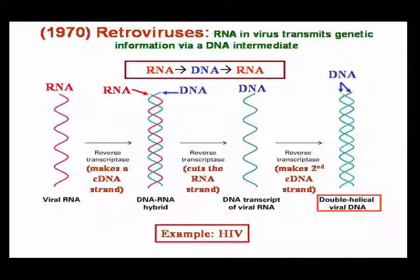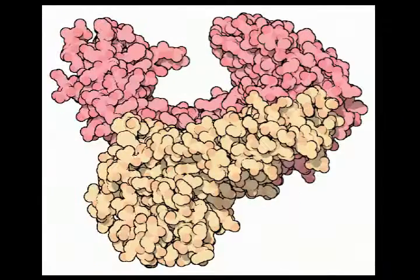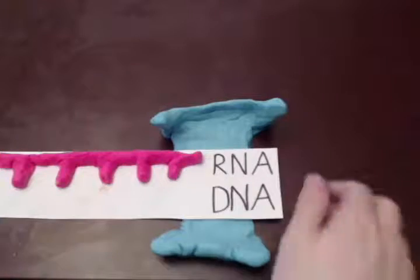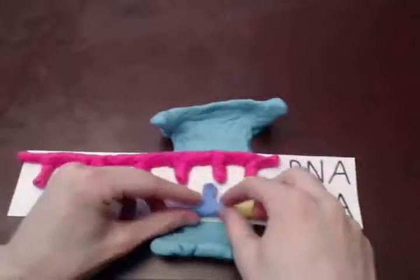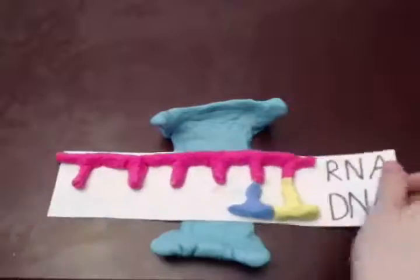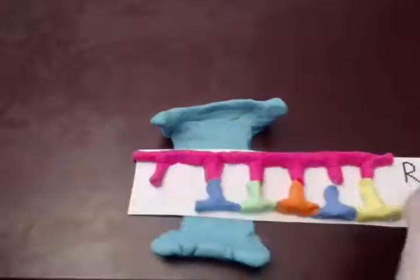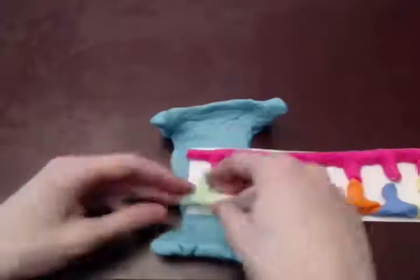When HIV infects a host cell, it must first convert its single-stranded RNA genome into a double-stranded piece of viral DNA. This is where reverse transcriptase comes into play. There are two active sites on the enzyme: the polymerase site and the nuclease site. At the polymerase site, viral single-stranded RNA is used as a template to synthesize a new piece of single-stranded DNA, forming an RNA-DNA complex.